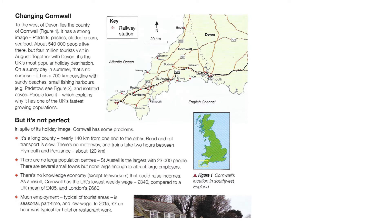The map shows clearly that there are no motorways — only A roads go through Cornwall. You can also see that Cornwall borders the county of Devon. Cornwall is actually one of the UK's most popular holiday destinations. It has 700 kilometres of coastline, sandy beaches, small fishing harbours and isolated coves, which explains why it has one of the UK's fastest growing populations.